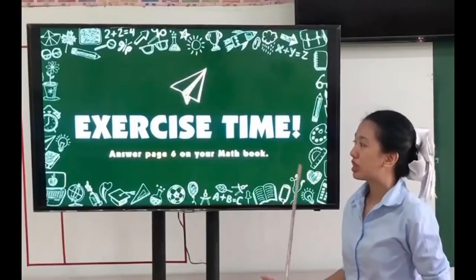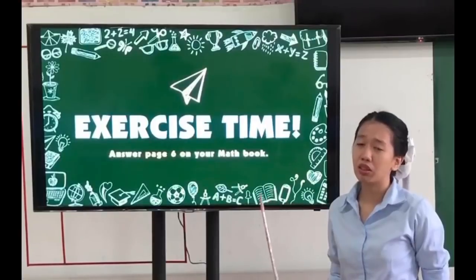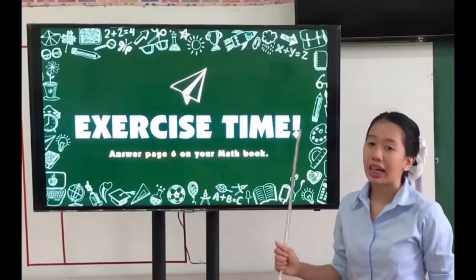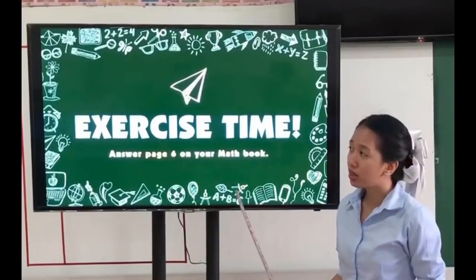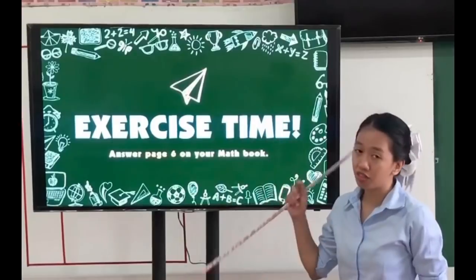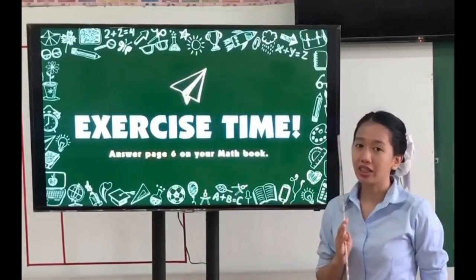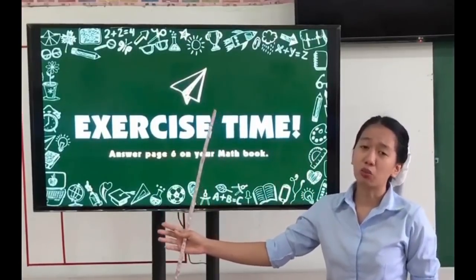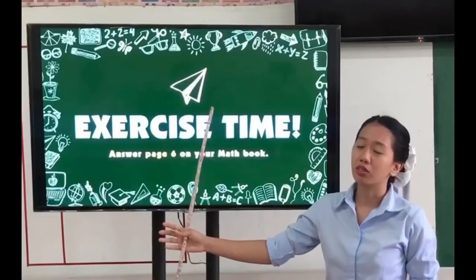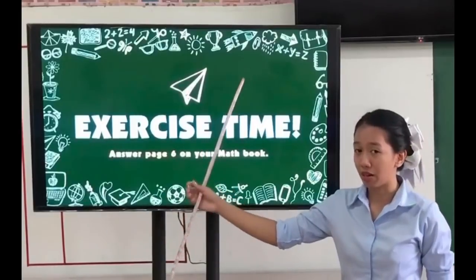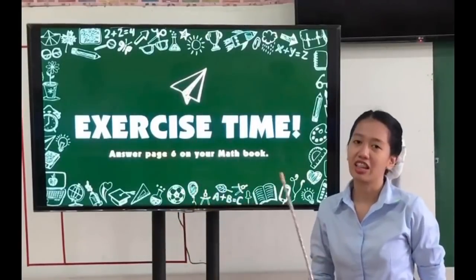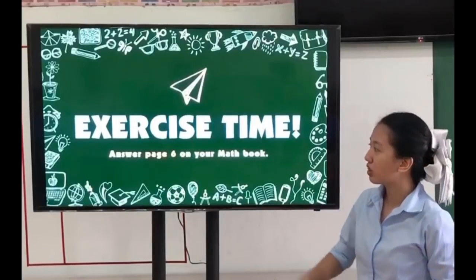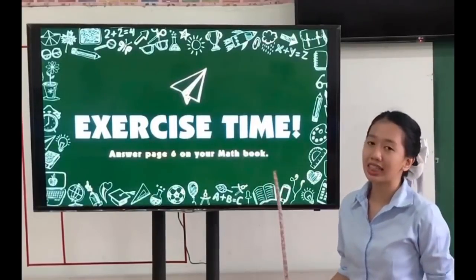Before we proceed to our exercise time, let's have a short review. When identifying place value, we start from our right to left. And when we write in words, we start from our left to right. Okay, do you understand? Now let's go to our exercise time.